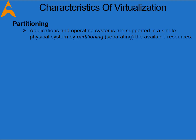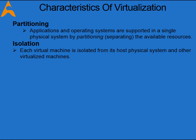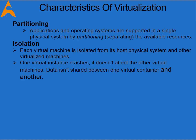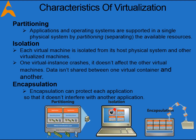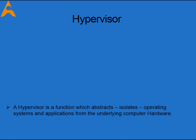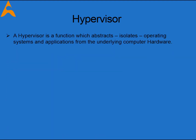Virtualization has three characteristics that make it ideal for cloud computing. First, partitioning: many applications and operating systems are supported in a single physical system by partitioning and separating the available resources. Second, isolation: each virtual machine is isolated from its host physical system and other virtualized machines, so if one virtual instance crashes it doesn't affect the others, and data isn't shared between containers. Third, encapsulation: a virtual machine can be represented and stored as a single file, identified easily based on the service it provides, and presented to an application as a complete entity — protecting each application so it doesn't interfere with another.